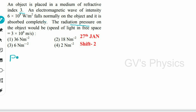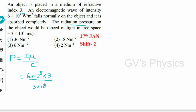Radiation pressure P = I · μ / c, where μ is the refractive index and c is the velocity of light. Substituting: P = (6 × 10⁸ × 3) / (3 × 10⁸). The 3s cancel and the 10⁸ terms cancel, leaving P = 6 N/m². Option 3 is the right answer.